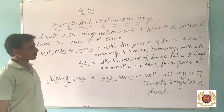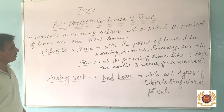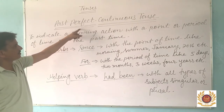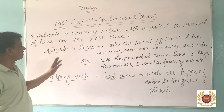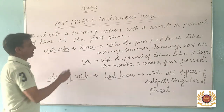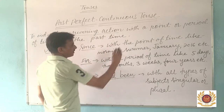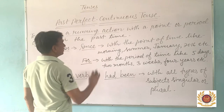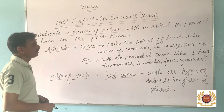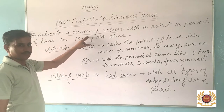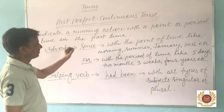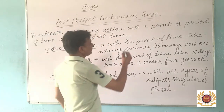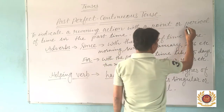Now I will teach and explain the last and fourth part of past tense — that is Past Perfect Continuous Tense. It is the fourth and last part of past tense. It is used to indicate a running action within a point or period of time in the past. We use Past Perfect Continuous Tense to show a running action in the previous time, where that action must be continuing with a point of time or period of time.